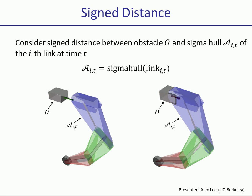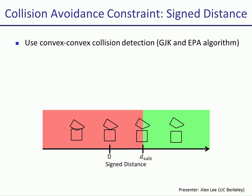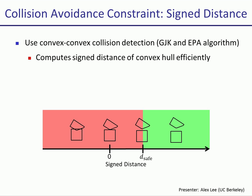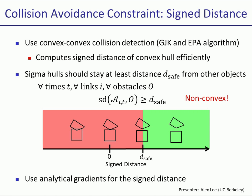We consider the signed distance between pairs of convex shapes using the GJK and EPA algorithms. These algorithms compute the signed distance of convex hulls efficiently. In particular, the sigma hulls are never explicitly computed. The probabilistic collision avoidance constraint is that the signed distance between sigma hulls and obstacles is above some safety distance, for sigma hulls of all links at all time steps and for all obstacles. The figure illustrates an obstacle and a sigma hull for different signed distances. For our problem to be feasible, we want the cases in the green region. Notice that the signed distance constraint is not convex, so we linearize it. Fortunately, analytical gradients for the signed distance with respect to the belief can be computed.